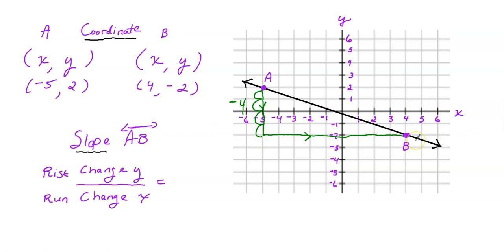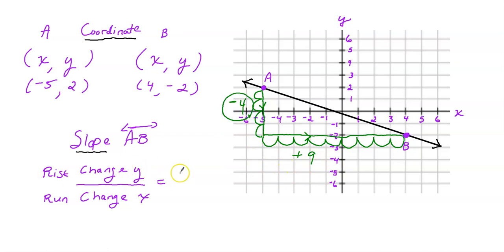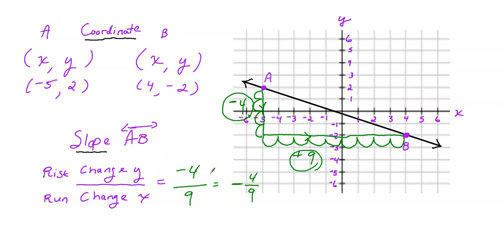And then how many units in the horizontal direction? Let me count — that's nine units to the right. Since I moved to the right, it's positive. So the change of y, or rise, is negative four, over the run, or change of x, which is nine. The slope is negative four-ninths, with the negative sign in the middle of the fraction.